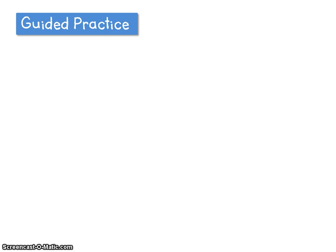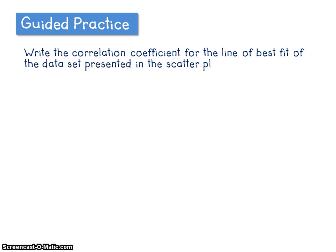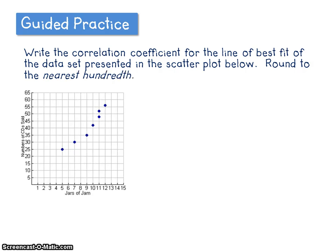Alright, so let's do a guided practice together. Write the correlation coefficient for the line of best fit of the data set presented in the scatter plot below. Round to the nearest hundredth. So here we have that third scatter plot that we looked at in the core lesson. And you also have an empty table of values. So I would suggest filling in that table before we get started.